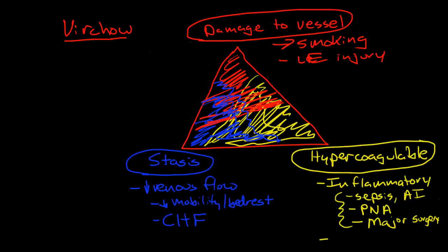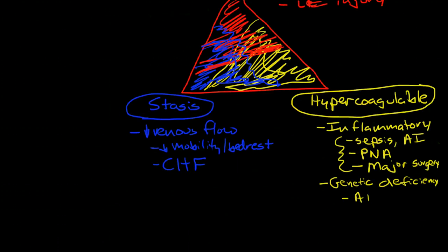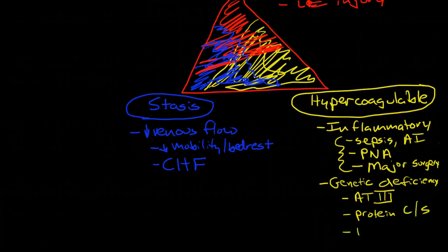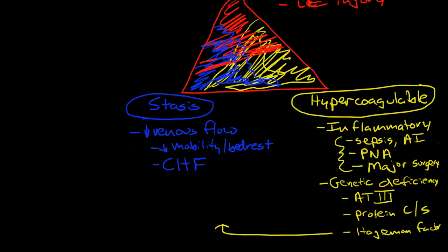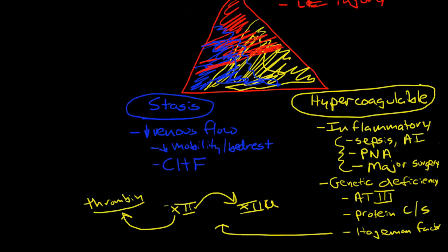We can also have genetic or acquired deficiencies in some of the anticoagulation factors — antithrombin 3 deficiency, protein C, or protein S. And then we could have a Hageman factor deficiency. Hageman factor is factor 12 and it actually initiates the start of the intrinsic coagulation cascade. However, Hageman factor is also an important negative feedback chemical that actually stops thrombin formation.